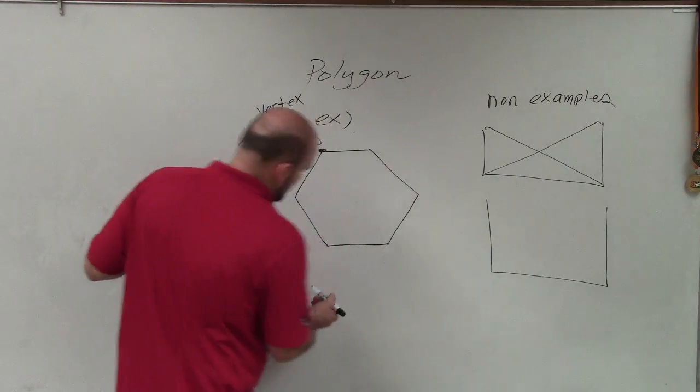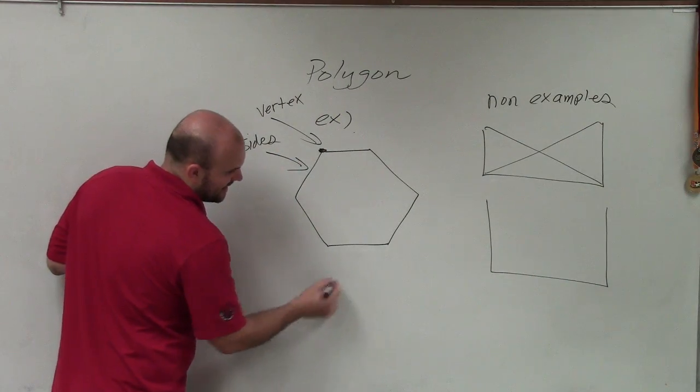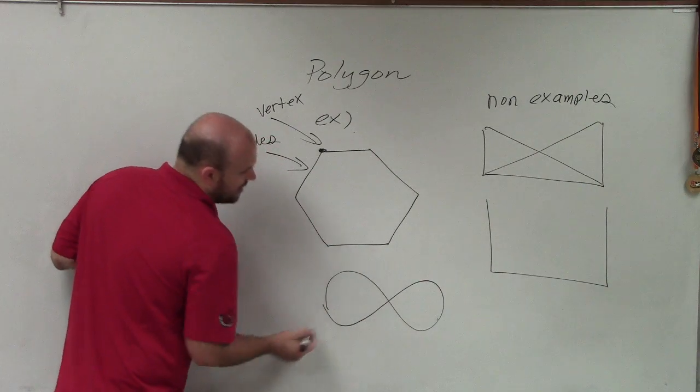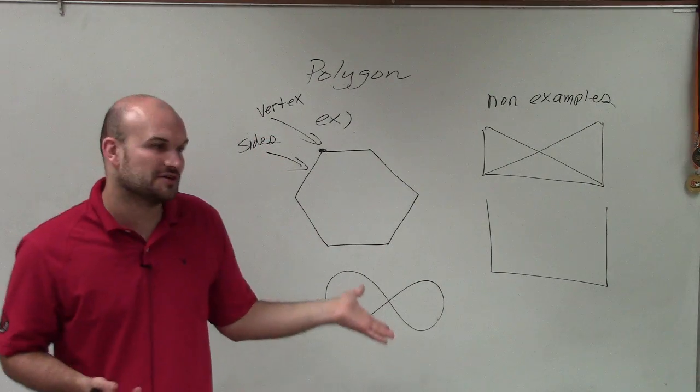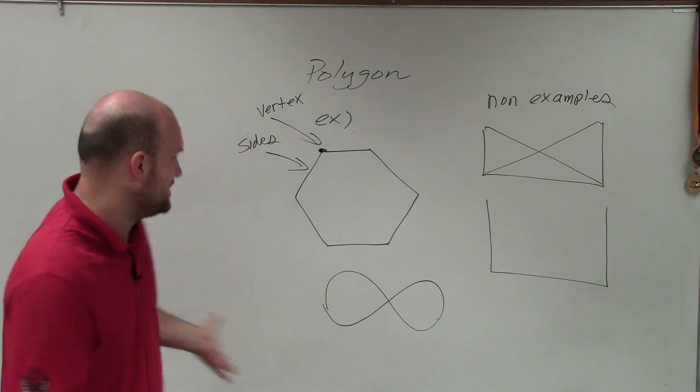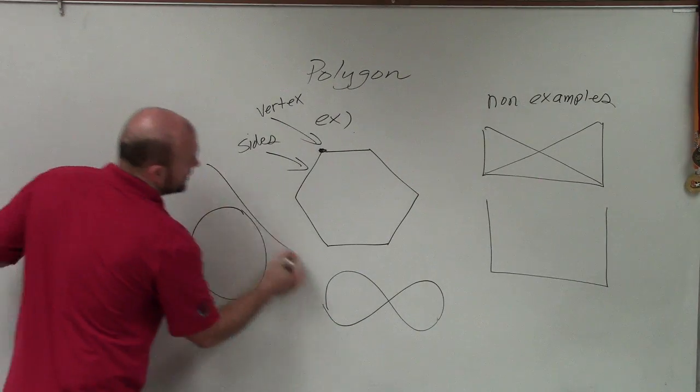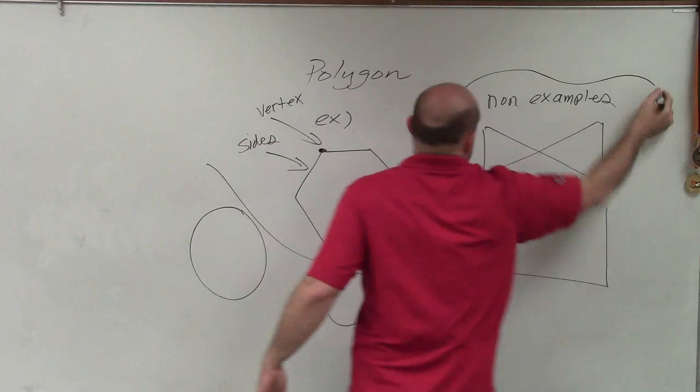And then also, when we're talking about sides, we need sides to be straight lines. So therefore, a figure something like that would also not be a polygon. Or even just a circle would be another non-example of a polygon.